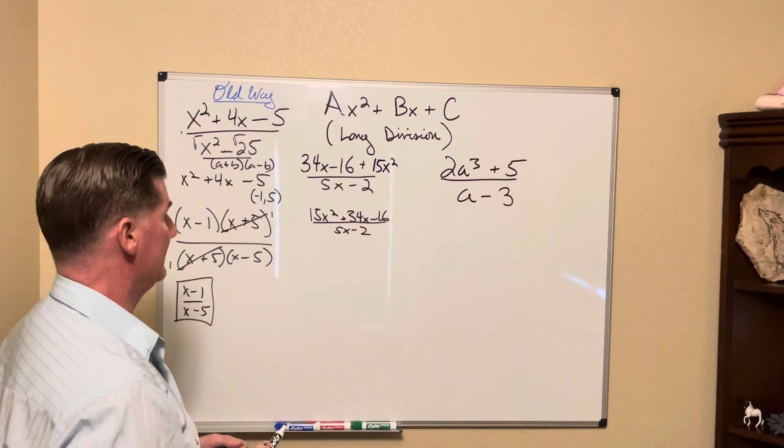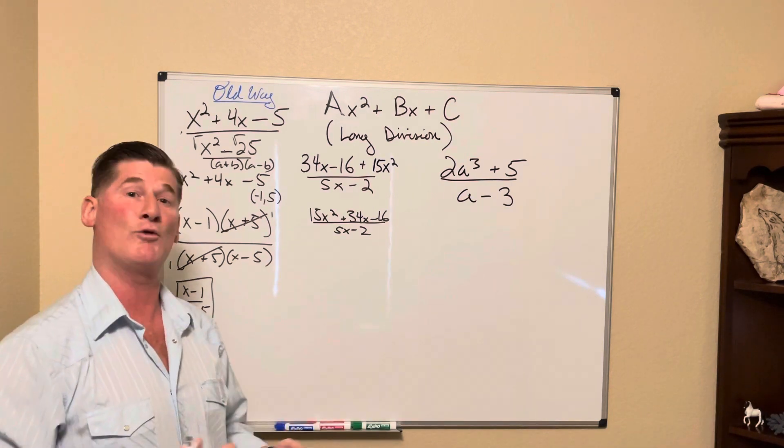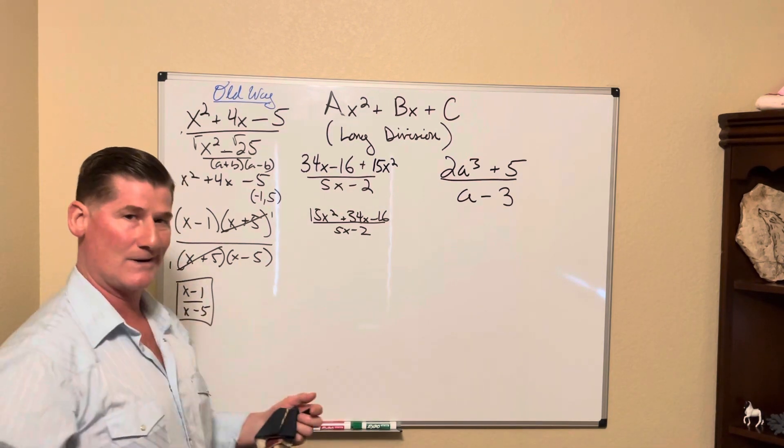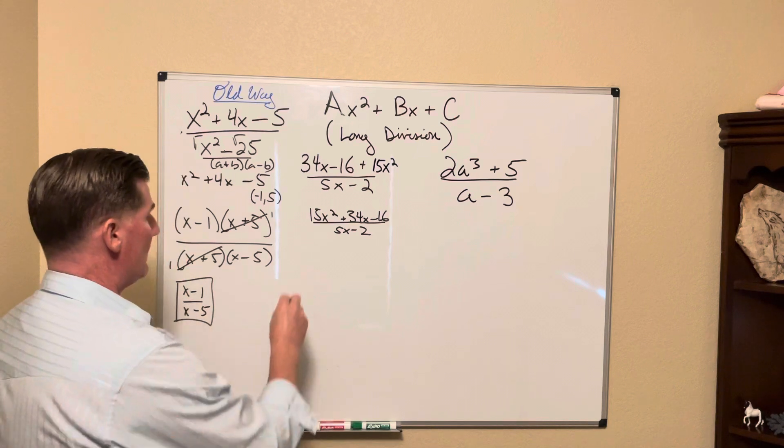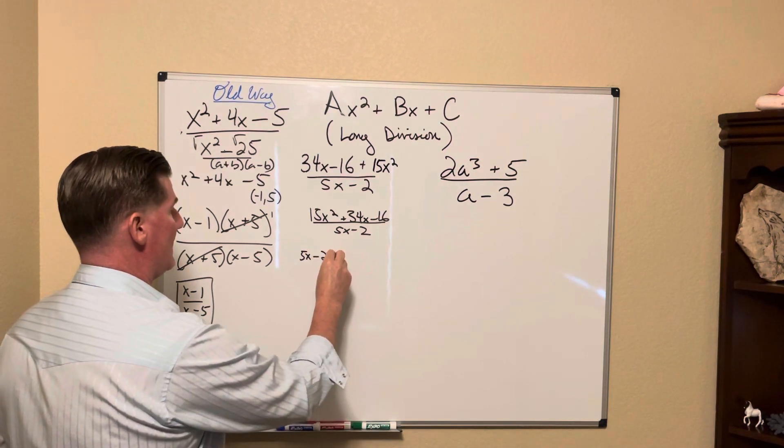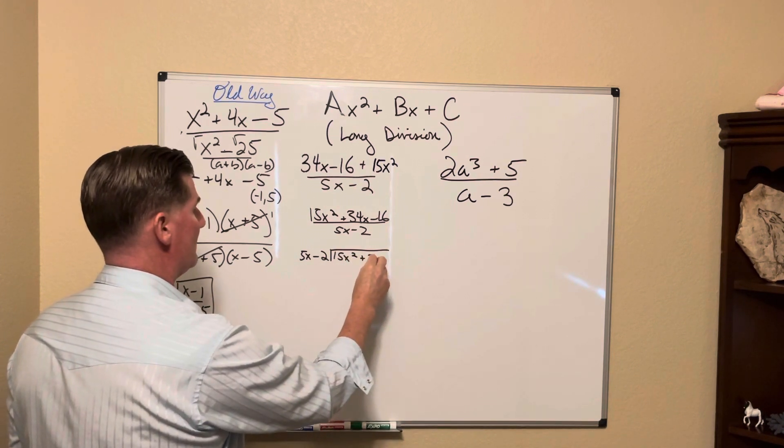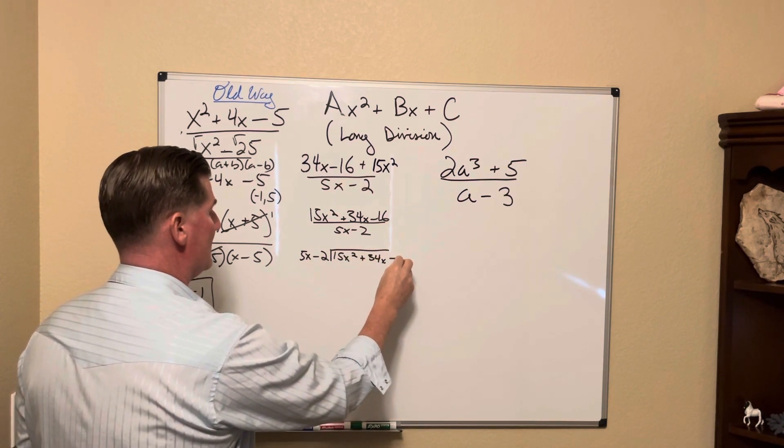In this case, we're going to rewrite as 15x squared plus 34x minus 16, all over 5x minus 2. Getting it in the right order is very important. We'll show you right here in a second. Remember, this is the dividend and this is the divisor, and the answer is the quotient. The divisor in normal long division is on the outside and the dividend is on the inside: 15x squared plus 34x minus 16.